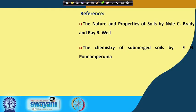The references for this lecture are 'The Nature and Properties of Soils' by Niles C. Brady and Weil, and 'The Chemistry of Submerged Soils' by Ponnamperuma. Please read these books for more thorough knowledge about problematic soils. We have finished Week 6 of lectures; in the next week we will start different aspects of soil fertility and plant nutrition. Thank you.